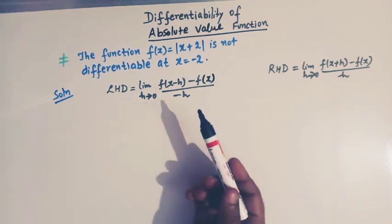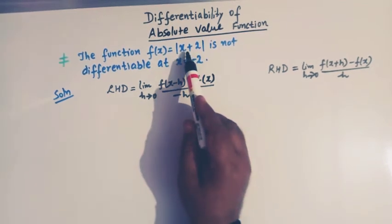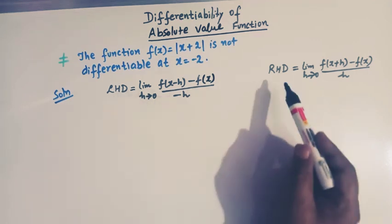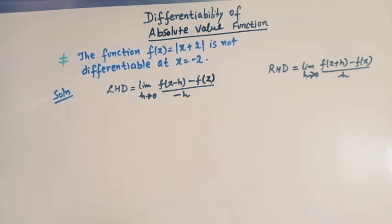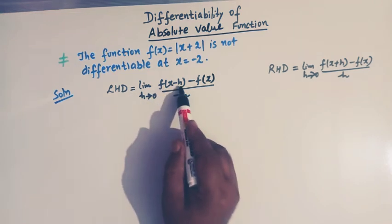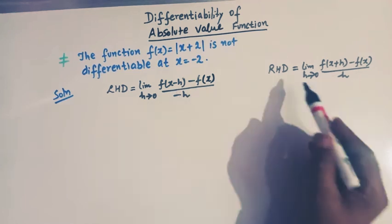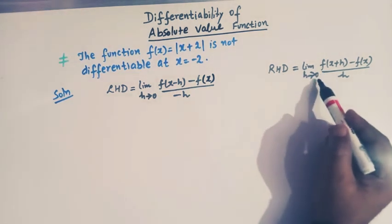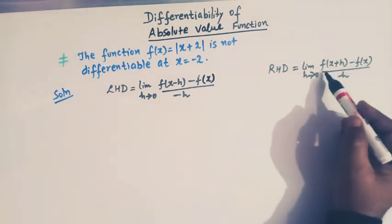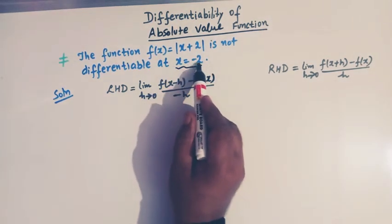We will discuss the differentiability of this function by evaluating the left-hand derivative and right-hand derivative. The left-hand derivative is given by: limit h→0 of [f(x - h) - f(x)] / (-h), and the right-hand derivative is: limit h→0 of [f(x + h) - f(x)] / h. Here the point is x = -2.